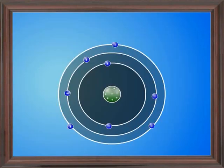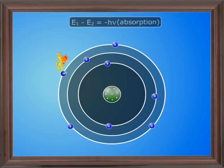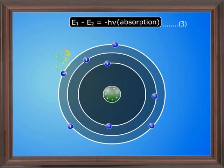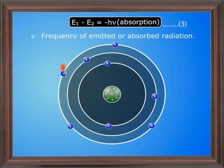If the electron jumps from an orbit of energy e1 to e2, then the energy difference is given by e1 minus e2, which is equal to minus h nu, which is absorption, that is equation 3. Nu is the frequency of emitted or absorbed radiation. Equation 2 and 3 explain the spectral lines emitted by different elements.